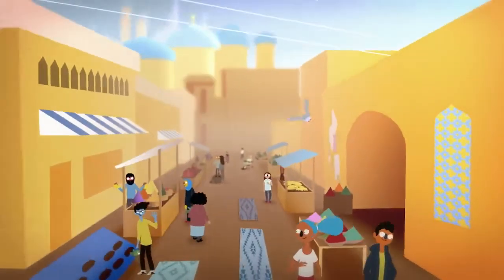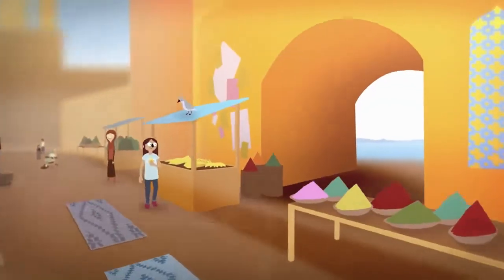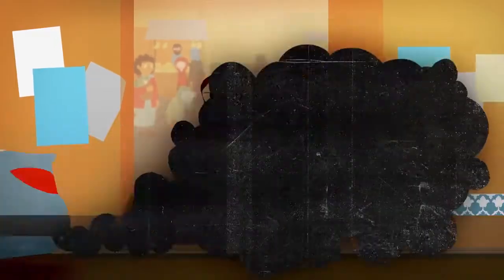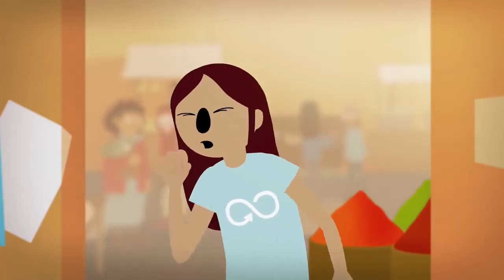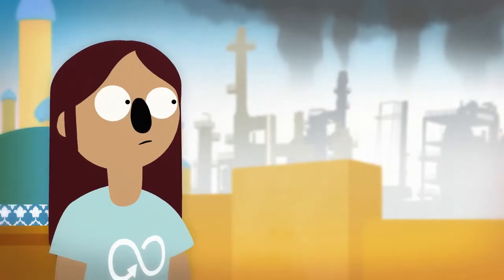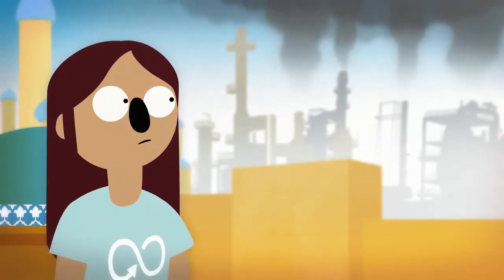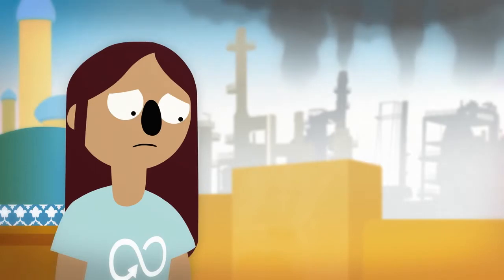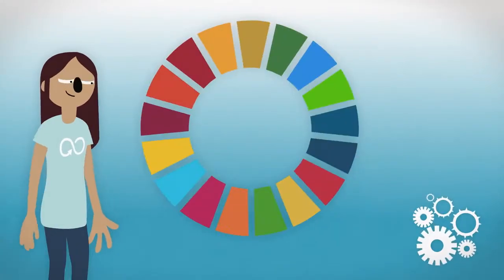First stop is Istanbul in Turkey, where we meet Elif. She's an inventor. Like many big cities, there's a lot of pollution in Istanbul. Most of it's caused by petroleum-based plastics. Elif wasn't happy about that, and wondered what she could do.